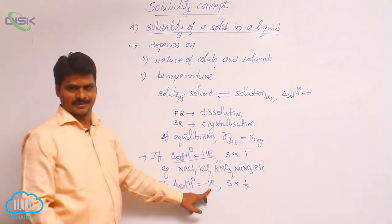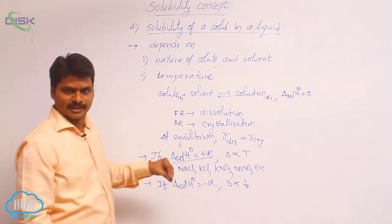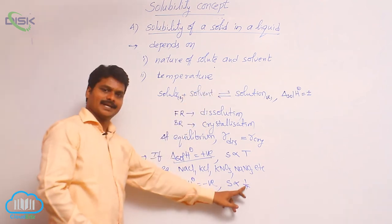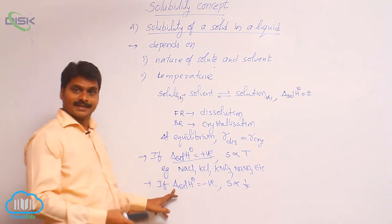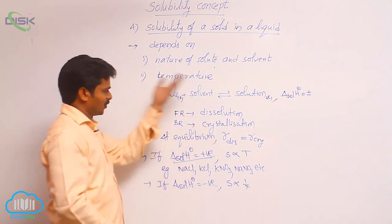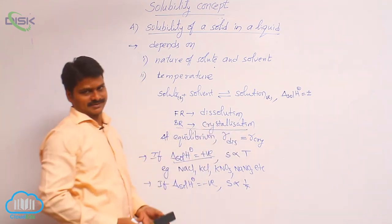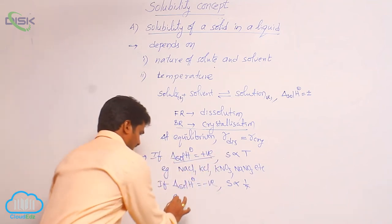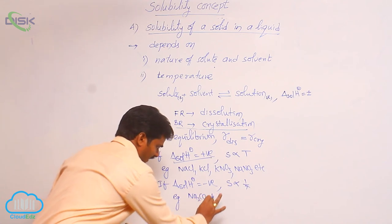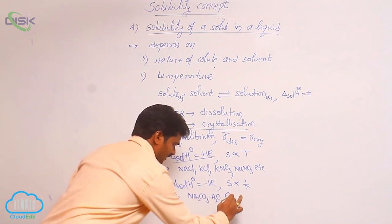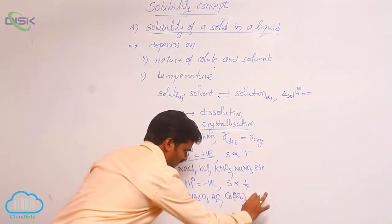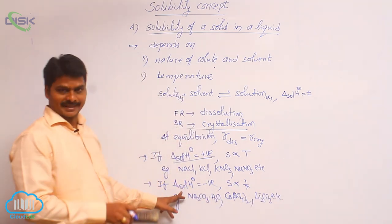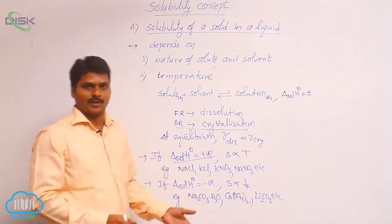If ΔsolH° is negative, examples include Na₂CO₃·H₂O, cesium sulfate, and Li₂CO₃. For these compounds, solubility decreases with increasing temperature — they have more solubility at low temperature. This is the effect of temperature on solubility for different kinds of solutes.